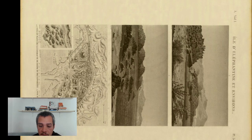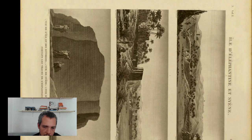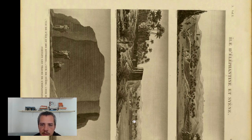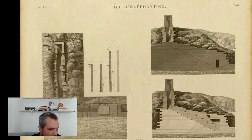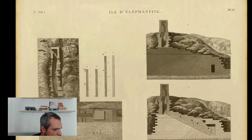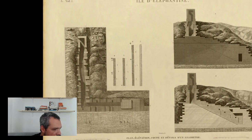This is the island of Elephantine. And look — in the island of Elephantine there is a pyramid, very broken down. It was just recently confirmed to be a pyramid, but it doesn't have any internal chamber. These drawings are beautiful — look at the stairs going down.